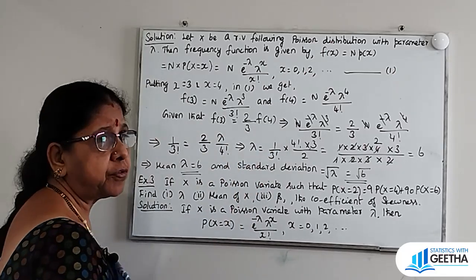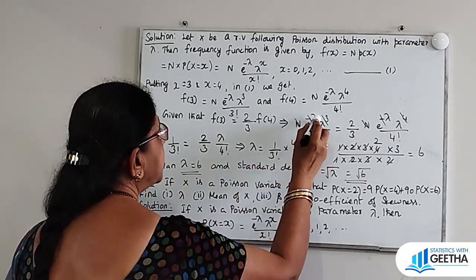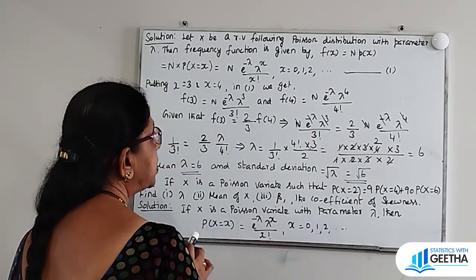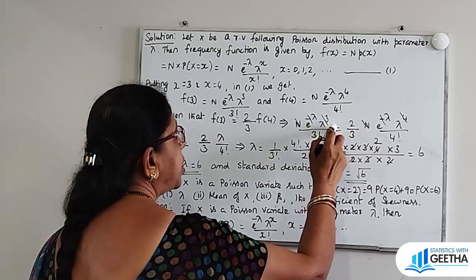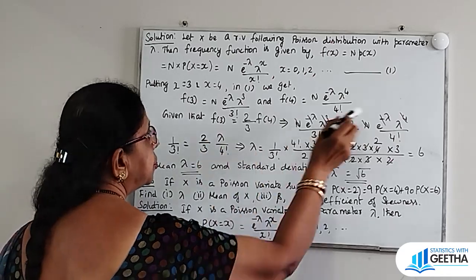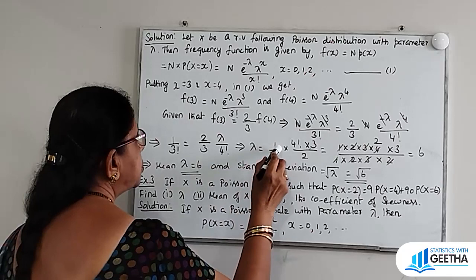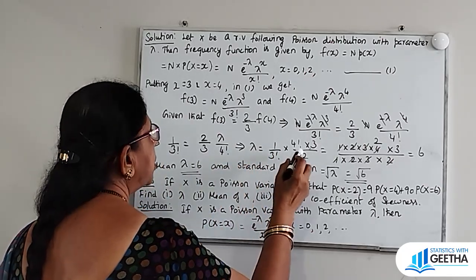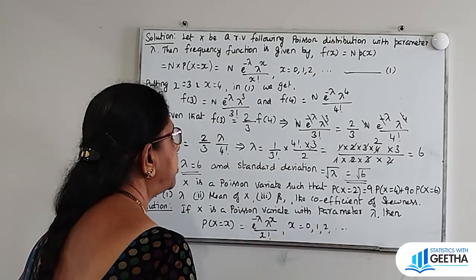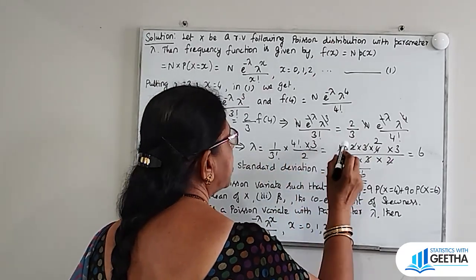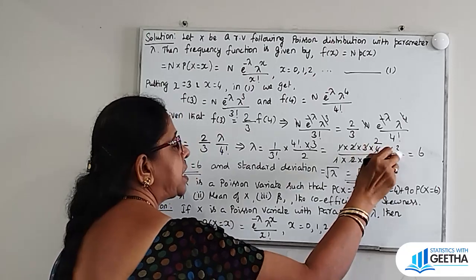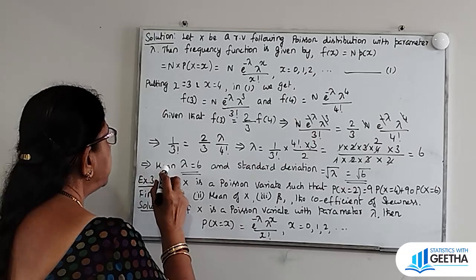Given that f(3) = (2/3) · f(4), substituting we get N · e^(−λ) · λ³ / 3! = (2/3) · N · e^(−λ) · λ⁴ / 4!. Simplifying, 4! / 3! = 4, and after cancellation, lambda = (4 × 3) / (2 × 1) = 6.